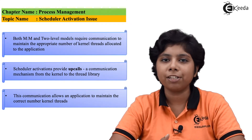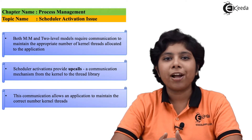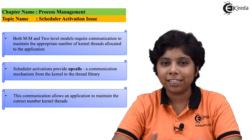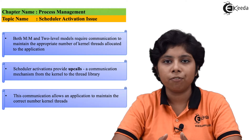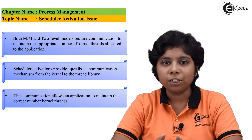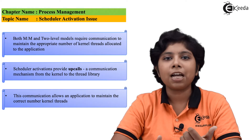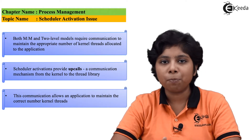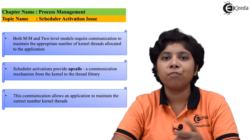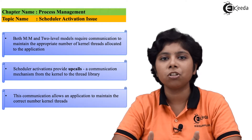The communication between the user-level thread and the kernel-level thread is often done by a process known as scheduler activation. The kernel provides an application with a set of virtual processors or LWPs, and the application can schedule any user thread to run on any available LWP. Furthermore, the kernel should inform the application about certain events known as upcalls. These upcalls are handled by the thread library through a procedure called the upcall handler, which provides all information about the virtual processor or LWP to the application before any task is scheduled on it.